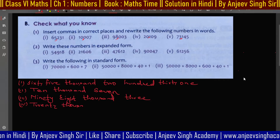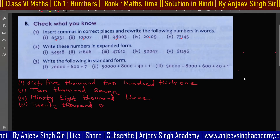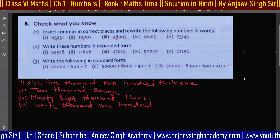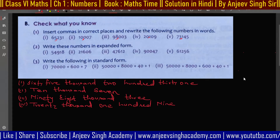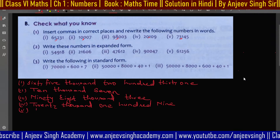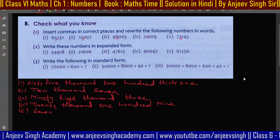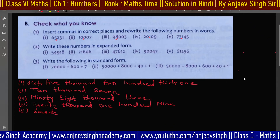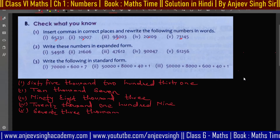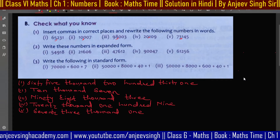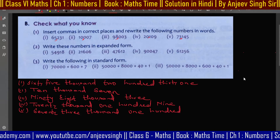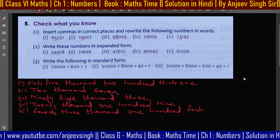Twenty thousand one hundred nine. Very good, Amrit! Now the next question will be solved by Tanmay. Tanmay, tell me the answer. Seventy-three thousand one hundred forty-five. Okay, so this is not very difficult — it's very easy.